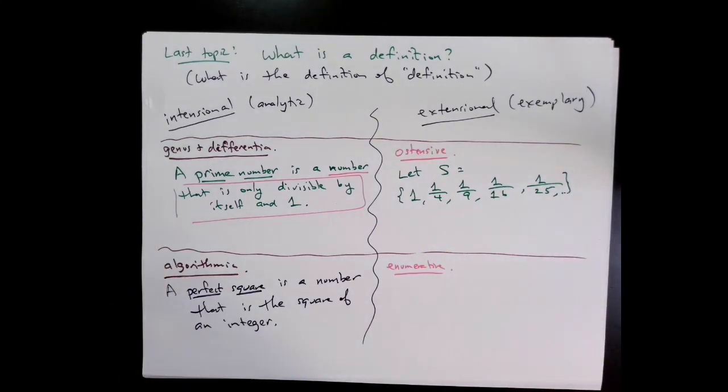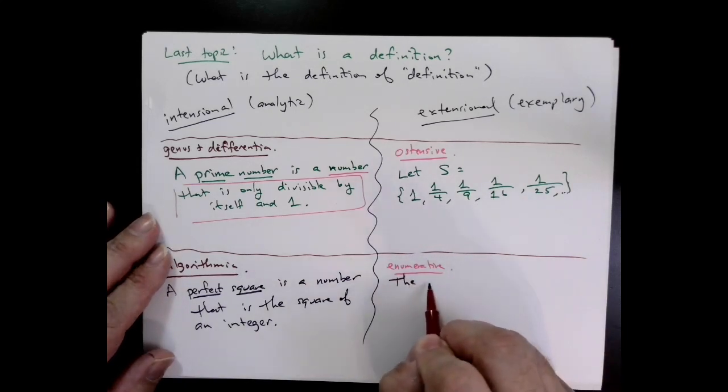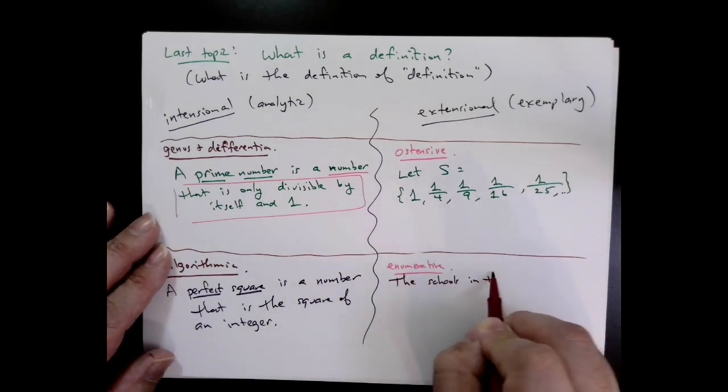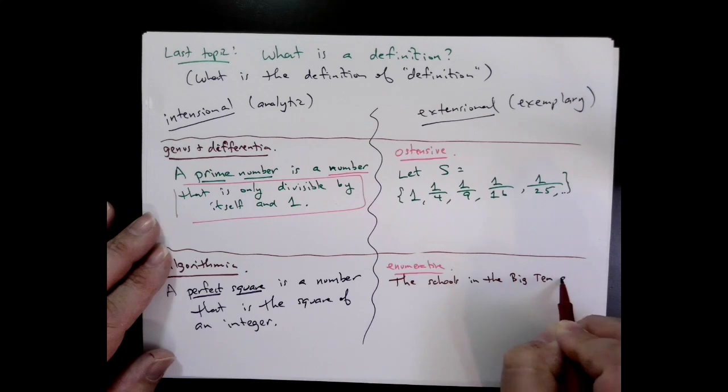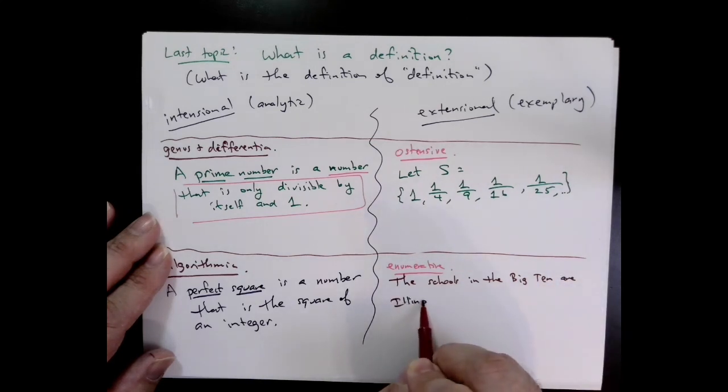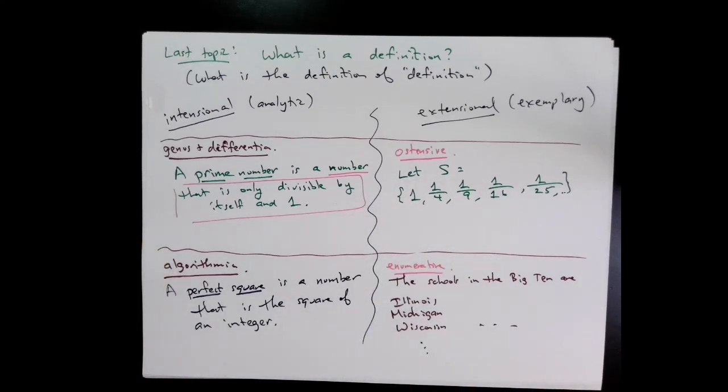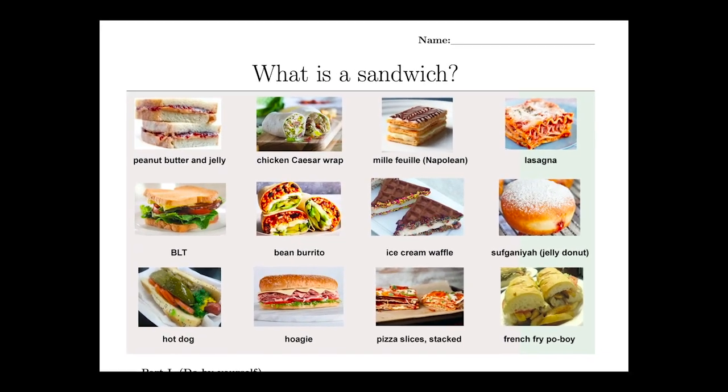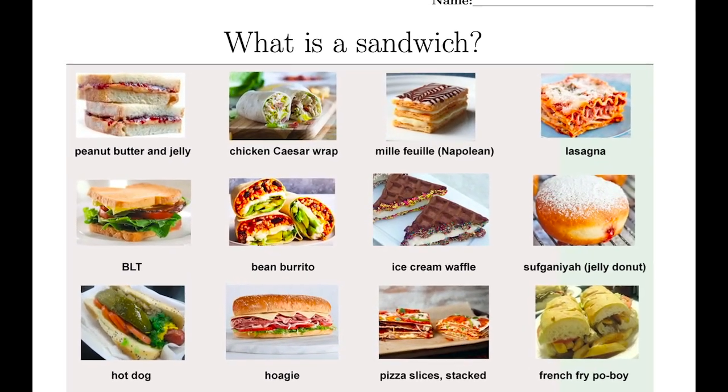Finally, enumerative is a definition that gives a list that gives the definition itself. For example, the schools in the Big Ten are Illinois, Michigan, Wisconsin—list all the schools in the Big Ten. The schools in the Big Ten we've just listed—those are the ones that are in, every other school is not, and that's it. Now in class we'll go on to the class activity.